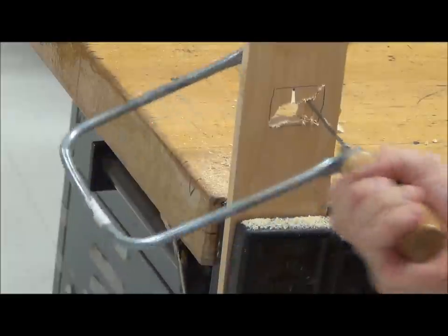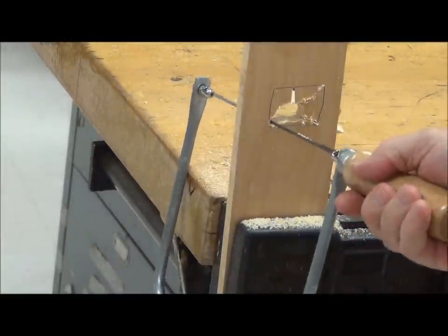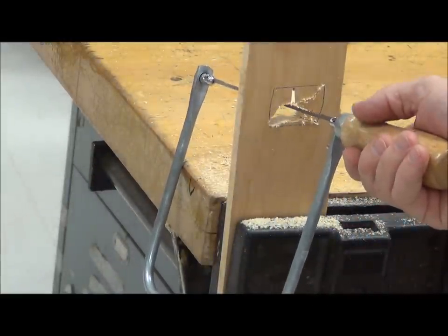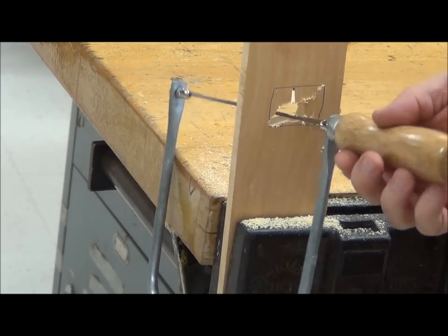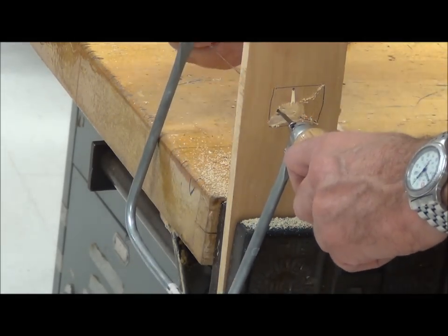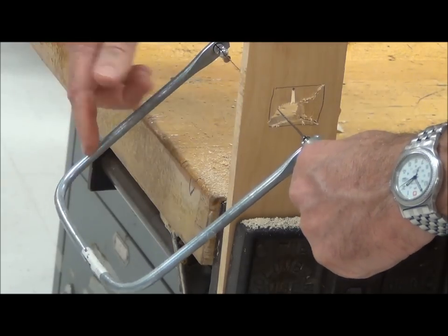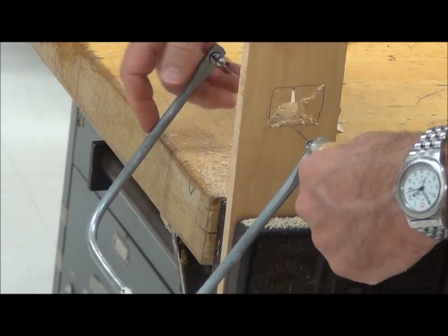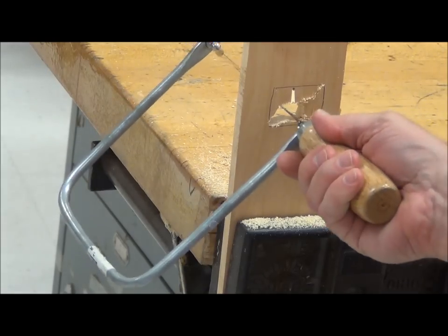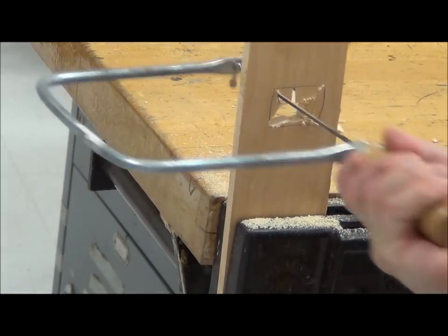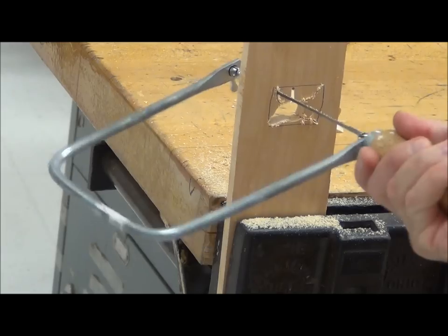Now I can't, I'm trying to cut to this corner, I can't quite get my saw to turn that way. Right? Gee, what am I going to do? Well, with the coping saw, I have the capability to turn the blade here in relation to the frame. So the frame of the saw is still sticking out here, but the blade's pointing this way. Now I can cut over to this corner here.